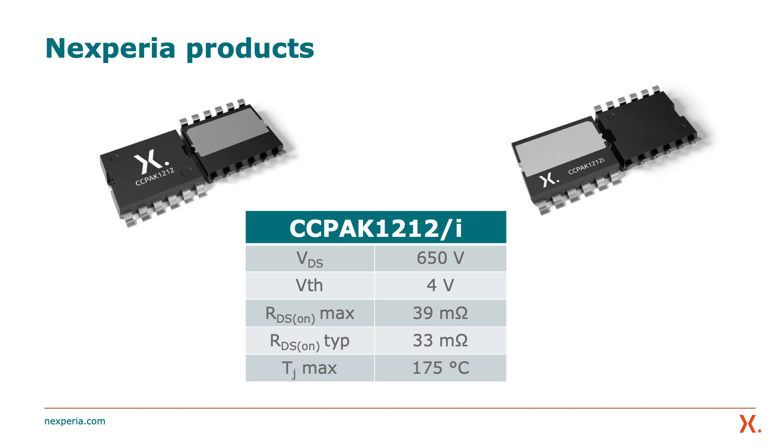The demo contains our Nexperia product, which is 650 volt 39 milliohm GaN FET packaged in our innovative surface mount copper clip packaging technology CC pack 12x12. With a compact size of 12x12 millimeter and only 2.5 millimeter in height, it contains Nexperia's latest power GaN technology with very low package resistance and package inductance. CC pack 12x12 is available in both bottom and top side cooling options with high 4 volt threshold with a plus minus 20 volt gate rating.